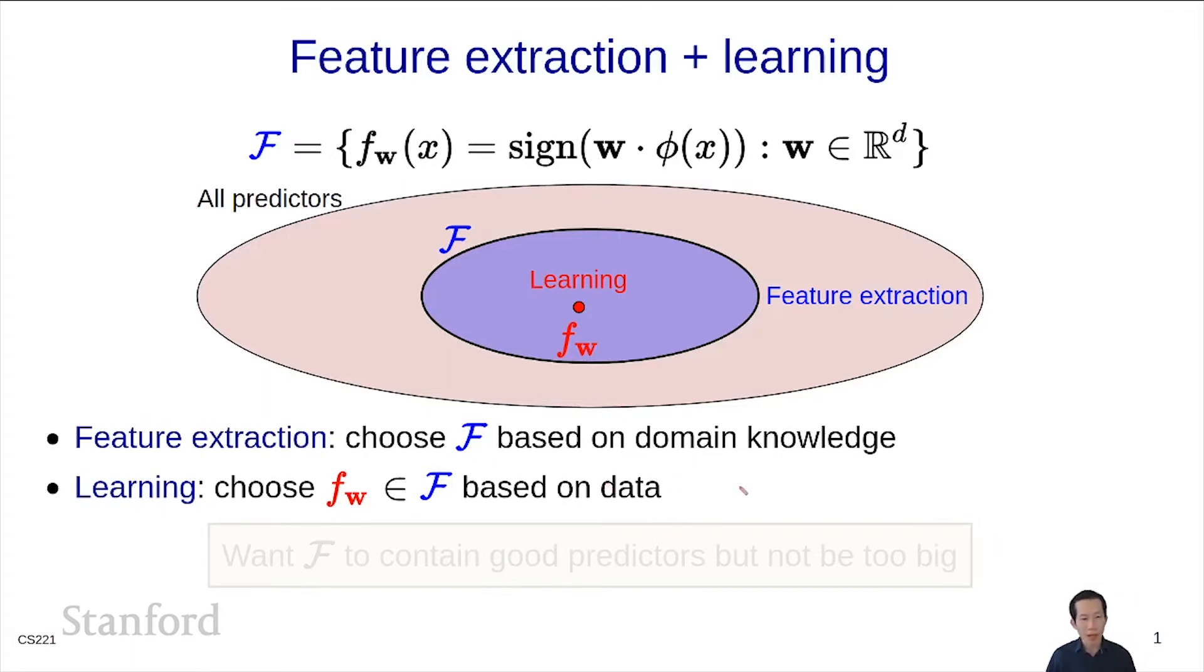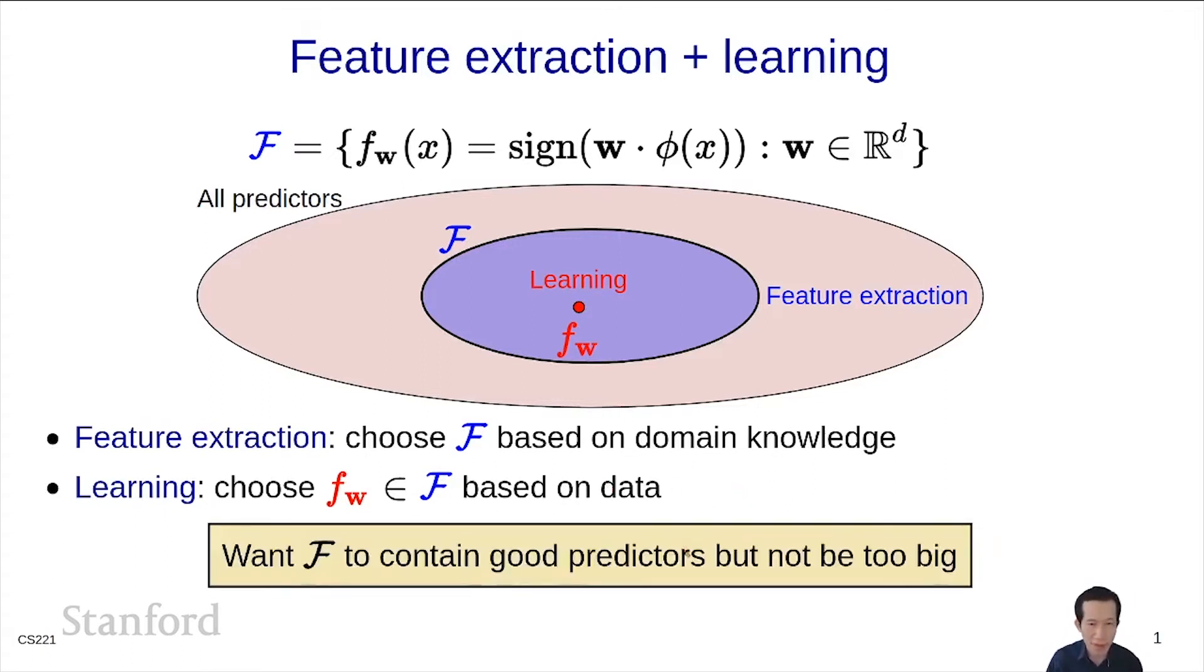Intuitively, we want the script F hypothesis class to contain the good predictors, of course, but it can also contain some bad ones because they will be filtered out based on data. But we don't want it to be too big so that the learning algorithm has trouble identifying good predictors from the bad predictors.